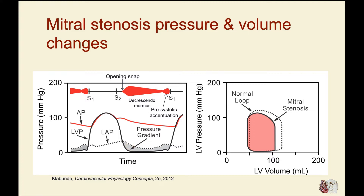In terms of heart sounds, the murmur occurs during diastole. Here is S2, where the aortic valve closes, and a little bit after that, once the mitral valve opens and begins filling the left ventricle, because of that narrowed opening, we have a high velocity of flow.